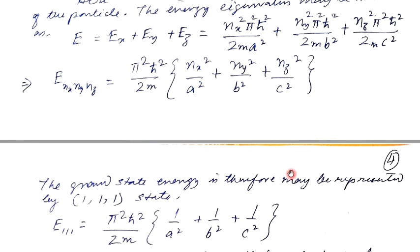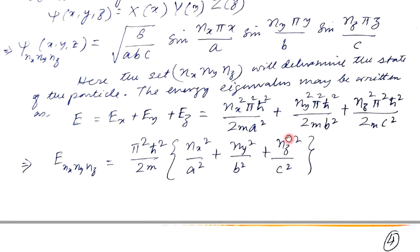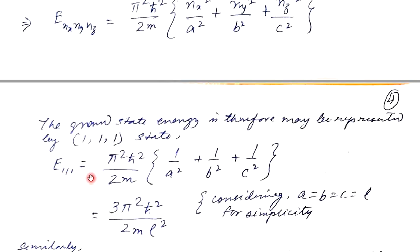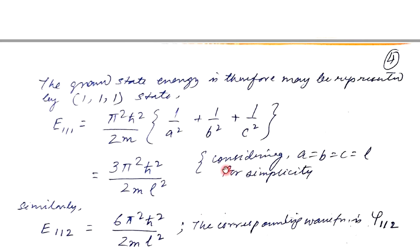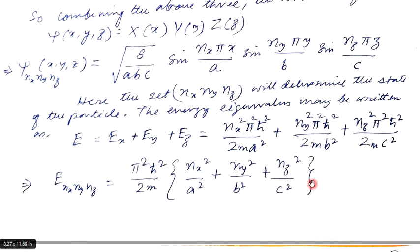Now let us do some simplification. For the ground state, we have E(1,1,1) since n=0 is not an acceptable value. This gives E(1,1,1) = π²h-cross²(1/A² + 1/B² + 1/C²). For the special case of a cube where A = B = C = L, the expressions simplify accordingly. The general expressions for the wave function and energy hold for the general box.